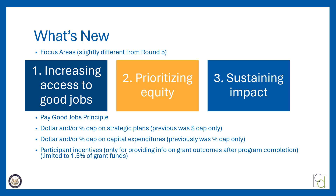Round 6 also puts a dollar and/or budget percentage cap on capital expenditures, where in prior rounds it was only a budget percentage cap. For Round 6, capital expenditures must not exceed 50% or $100,000 of a grant award, whichever is less, on allowable equipment purchases and renovations. See page 15 of the FOA for more details on this.